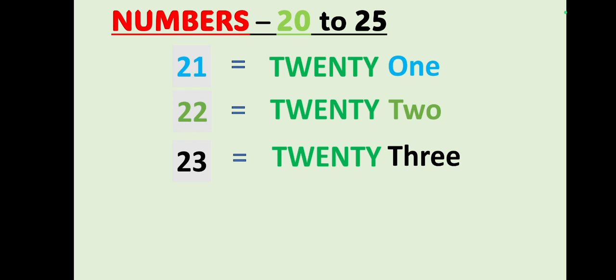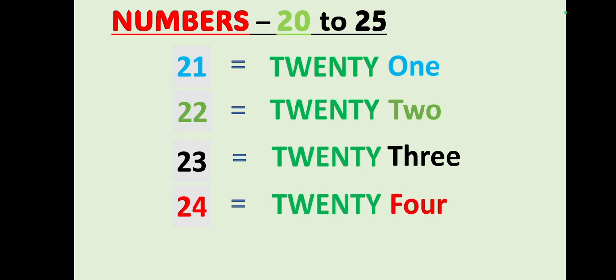Combine these two to easily write the numbers 20 to 25. Number 24: T W E N T Y, 20, F O U R, 4 — 24. Number 25: T W E N T Y, 20, F I V E, 5 — 25.